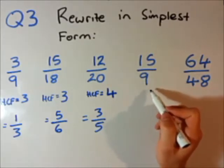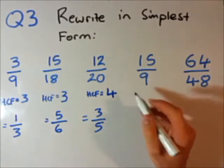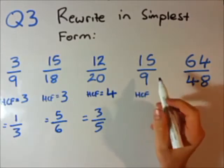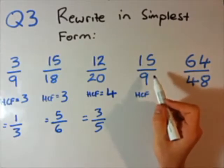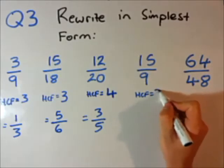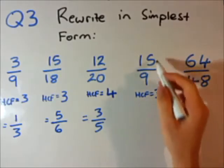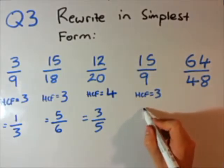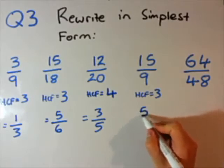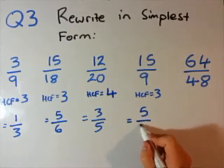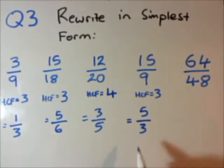Let's look at the next one: 15 divided by 9. Highest common factor — well, 3 goes into 15 and 9. 15 divided by 3 is 5. 9 divided by 3 is 3. Simplest form.